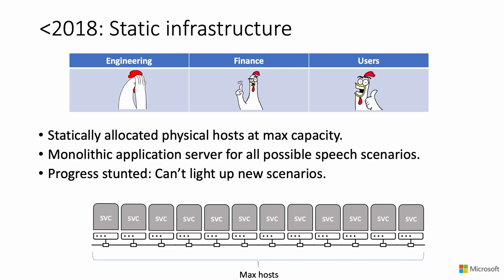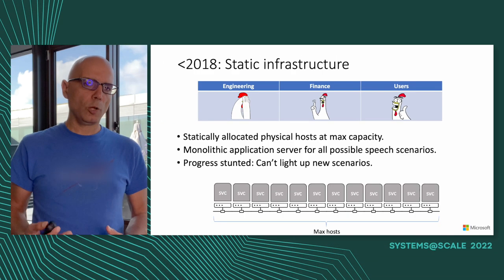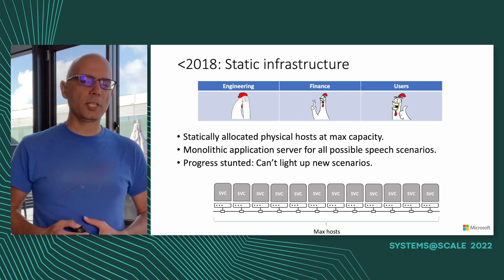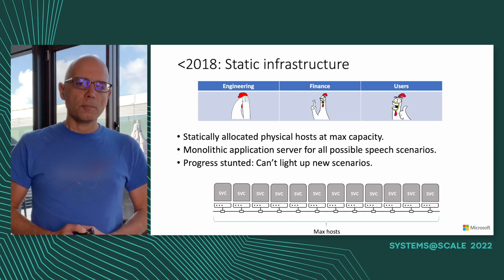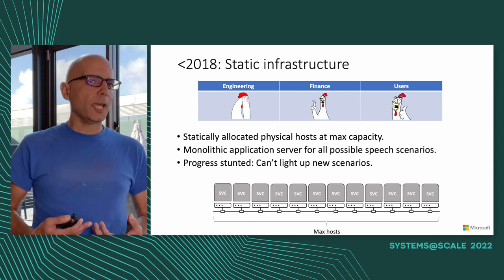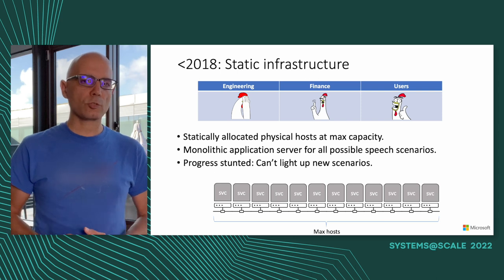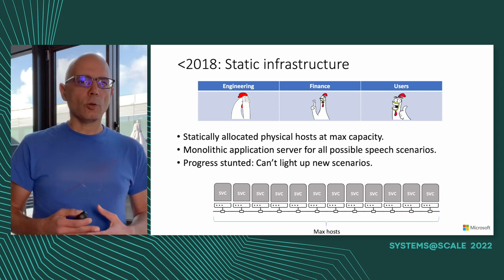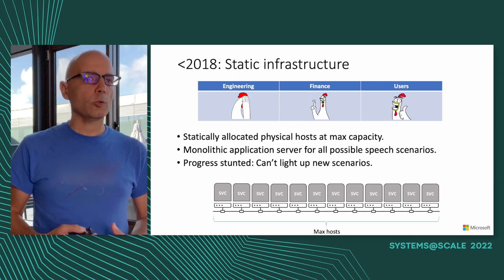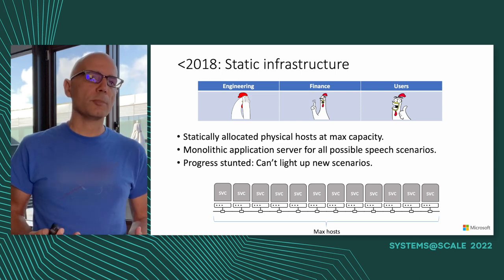Pre-2018, we were running on a static infrastructure where everything was statically allocated. We used to run on physical hosts statically allocated at the maximum possible demand we would ever get. We were also running as a monolith application — a single application server that ran all the models and all the scenarios for all users. Progress was stunted because we couldn't light up new scenarios; something like custom speech requires dynamic deployments and dynamic infrastructure, which we didn't have. Not to mention the extreme inefficiencies that came with monolithic and static infrastructure.